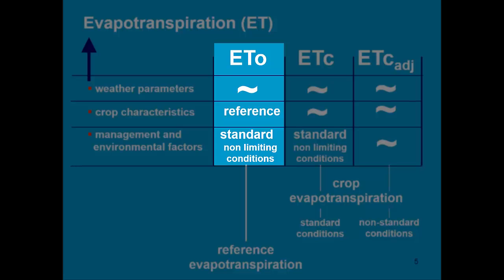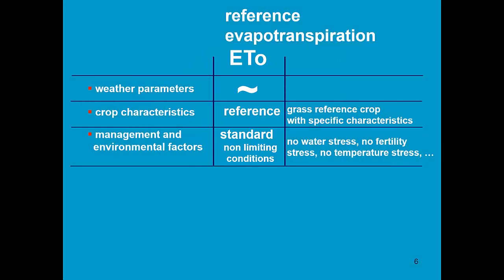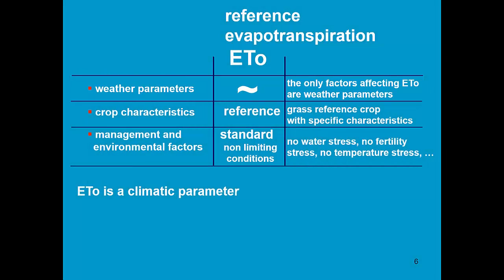In this presentation, we focus only on ET₀, on the reference evapotranspiration. So reference evapotranspiration considers the evapotranspiration from a grass reference crop under standard non-limiting conditions. So the only factors affecting reference evapotranspiration are weather parameters. Hence, ET₀ is a climatic parameter.